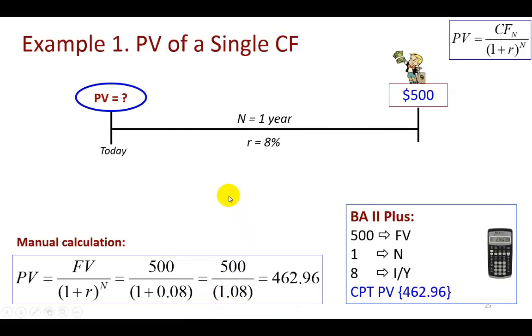Okay, so now in this first example, we're expecting 500 bucks one year from today and we should determine what the value is today given a rate of return of 8%. So using the present value formula and doing this manually, substituting and solving, we find that to be $462.96.